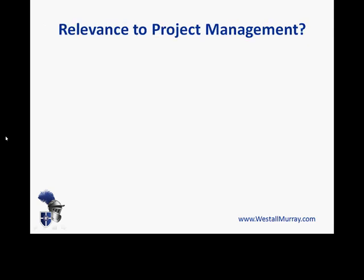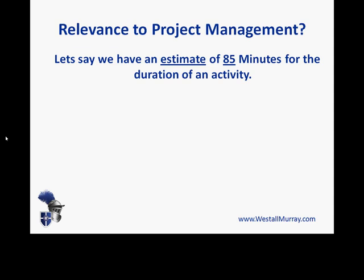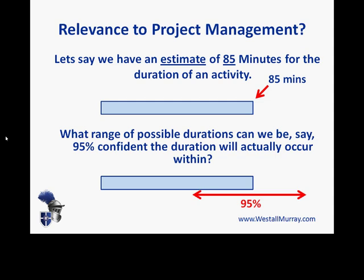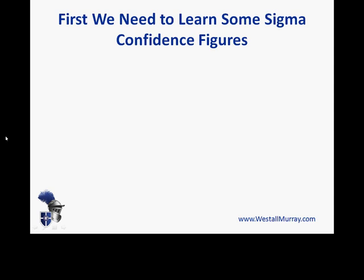Moving back to project management — we estimate a lot of things in project management. Consider an activity where we've estimated the duration to be 85 minutes. That's only an estimate. What we might want to know is: what is the range either side of that 85 minutes that we can be 95% confident we'll hit when this activity actually takes place? In other words, what is the earliest and latest likely duration specifying the range we can be 95% confident of landing within? To do that, we need to learn the following table of confidence levels that equate to different sigma values.